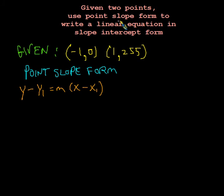We can use point-slope form to help get us there. In this example, we've been given (-1, 0) as one set of coordinates and (1, 255) as another set of coordinates.